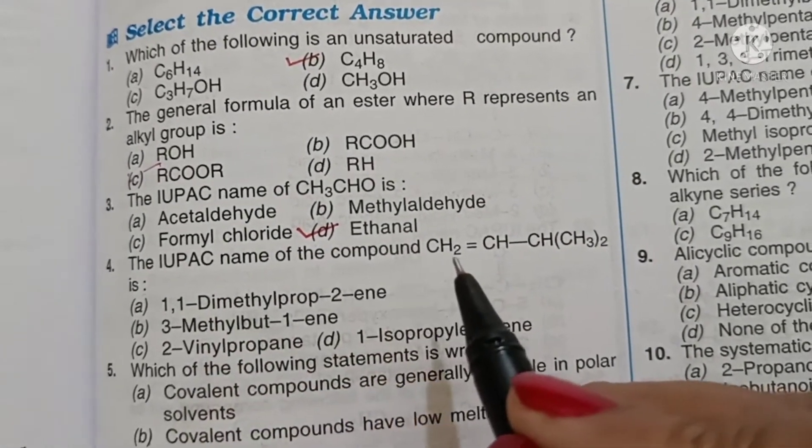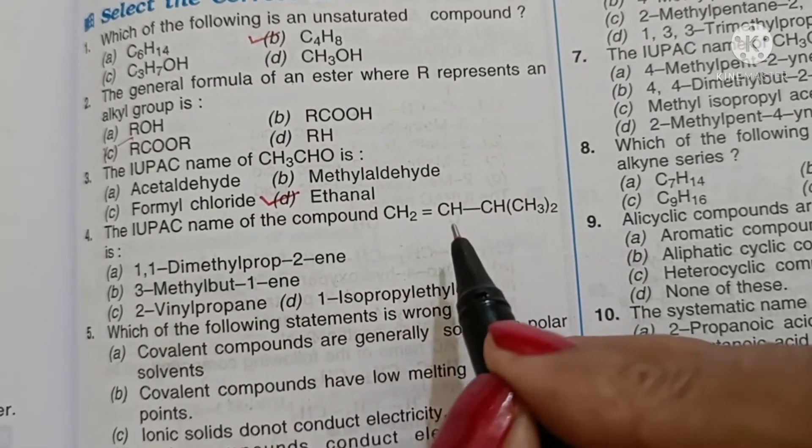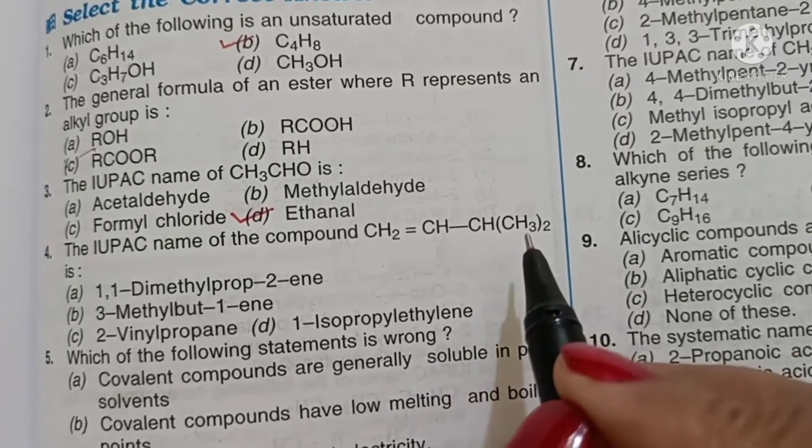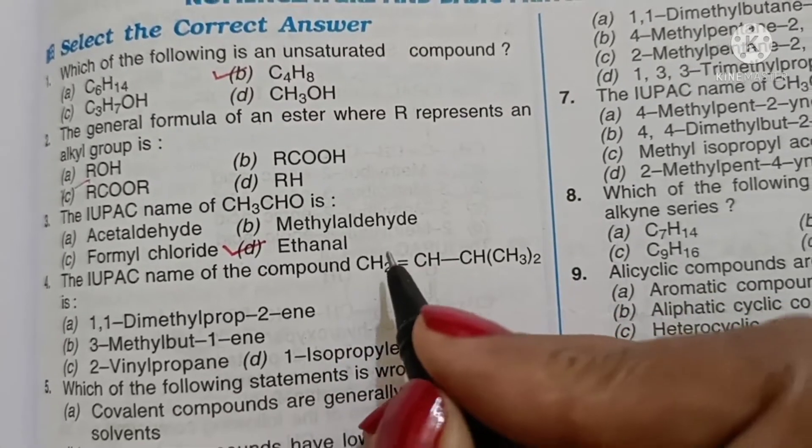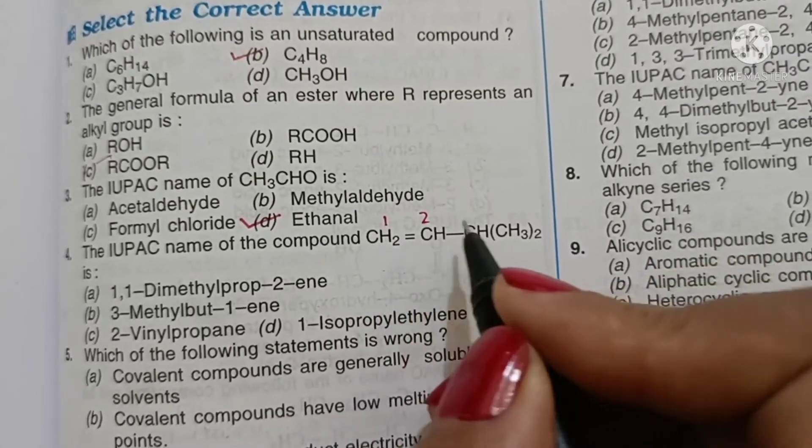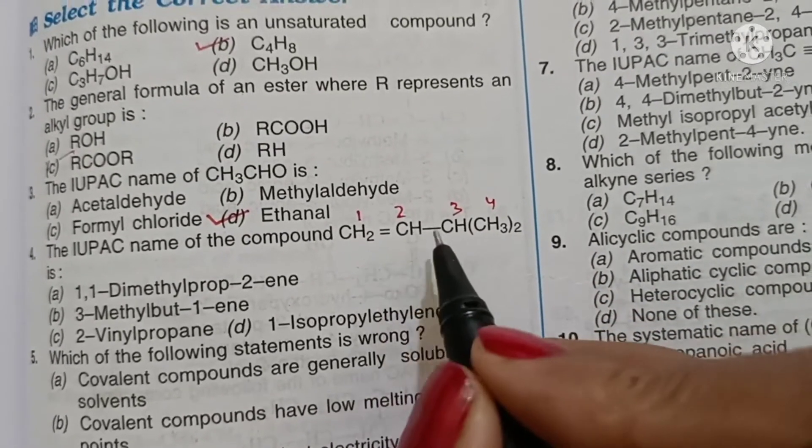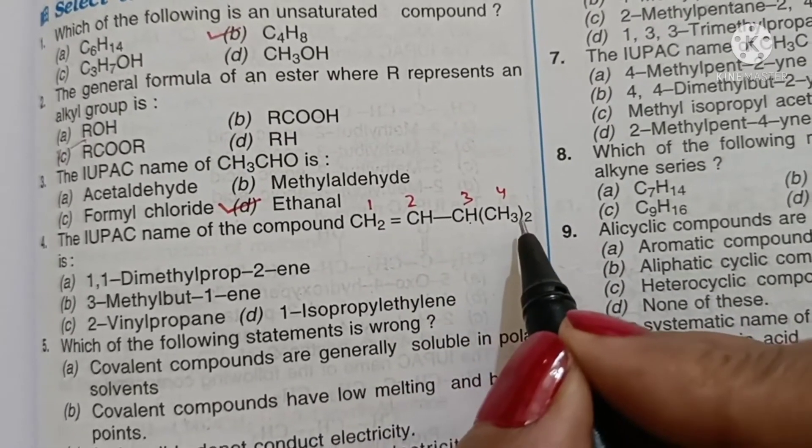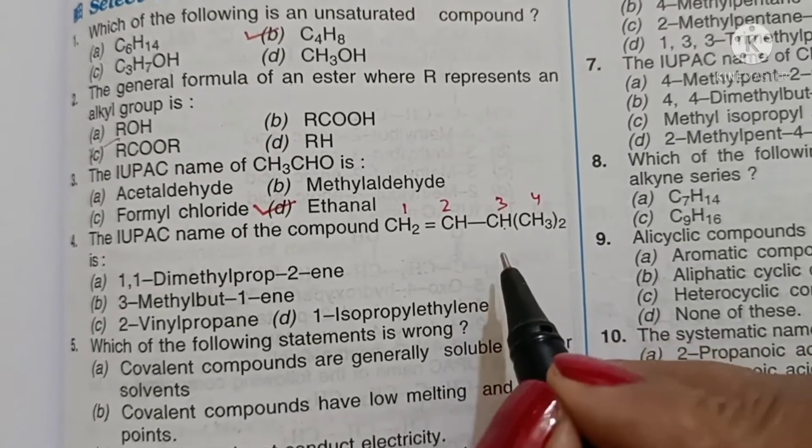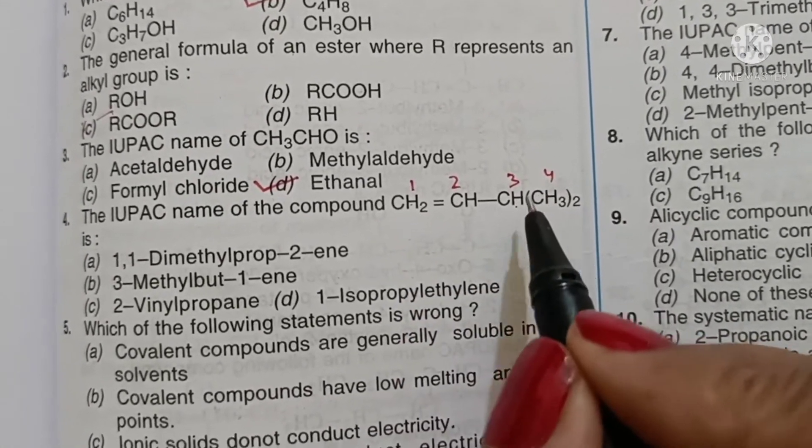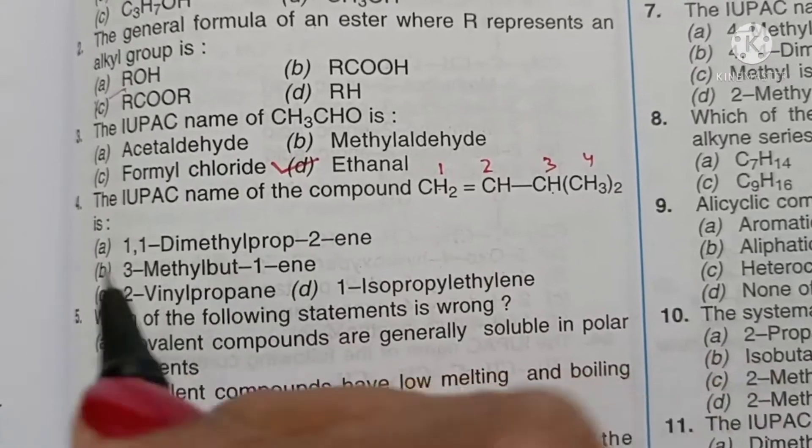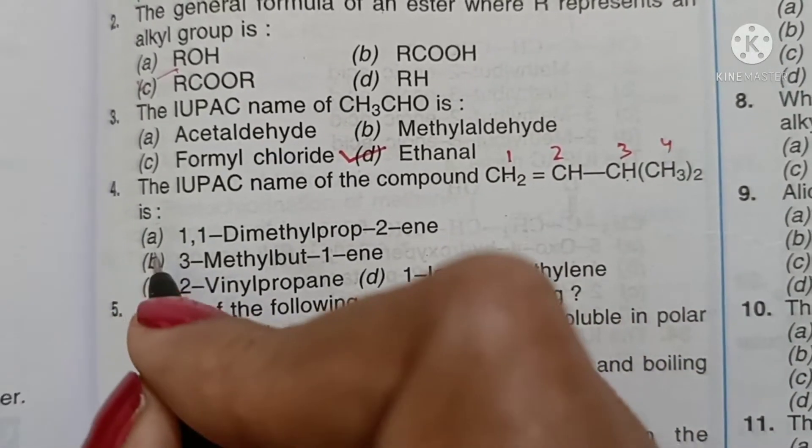IUPAC name of compound CH2 double bond CHCH(CH3)2. We number 2, 3, 4. At 3 we have another methyl, so 3-methylbut-1-ene, option B.